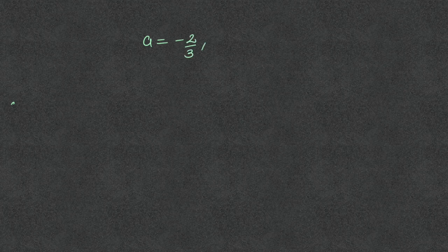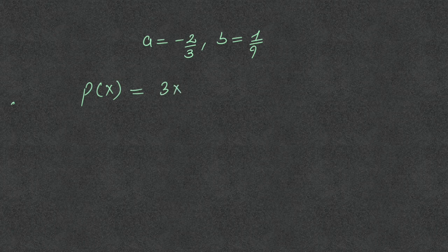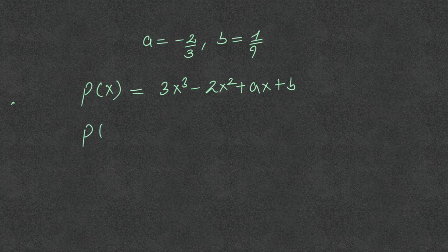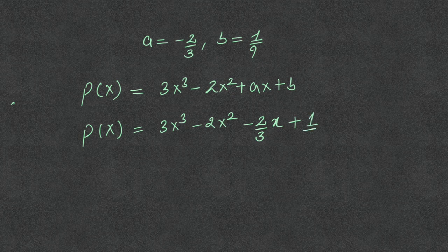We have a = -2/3 and b = 1/9. Since the polynomial p(x) = 3x³ - 2x² + ax + b, putting the values of a and b we get p(x) = 3x³ - 2x² - (2/3)x + 1/9.